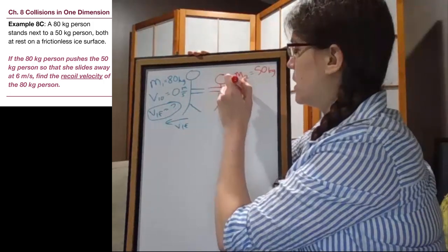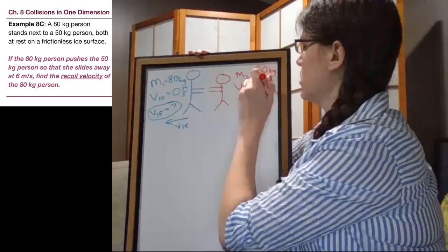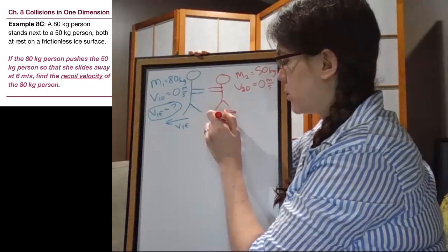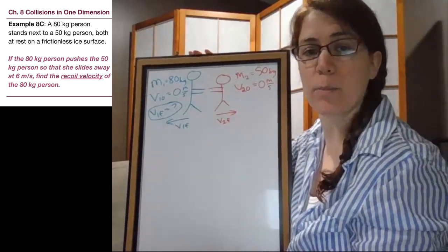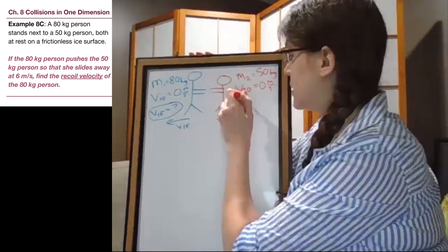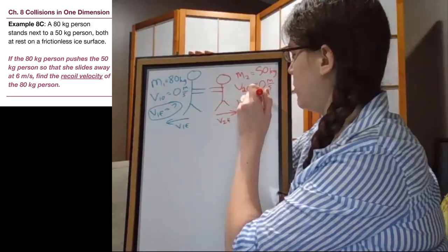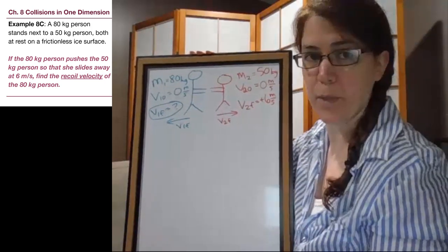For the other person, M2, we have a 50 kilogram mass. The initial velocity there is also zero. And when they move away from each other, the second person will be moving to the right. And so that 50 kilogram person slides away at 6 meters per second. So the final velocity is positive, because it's to the right, 6 meters per second.